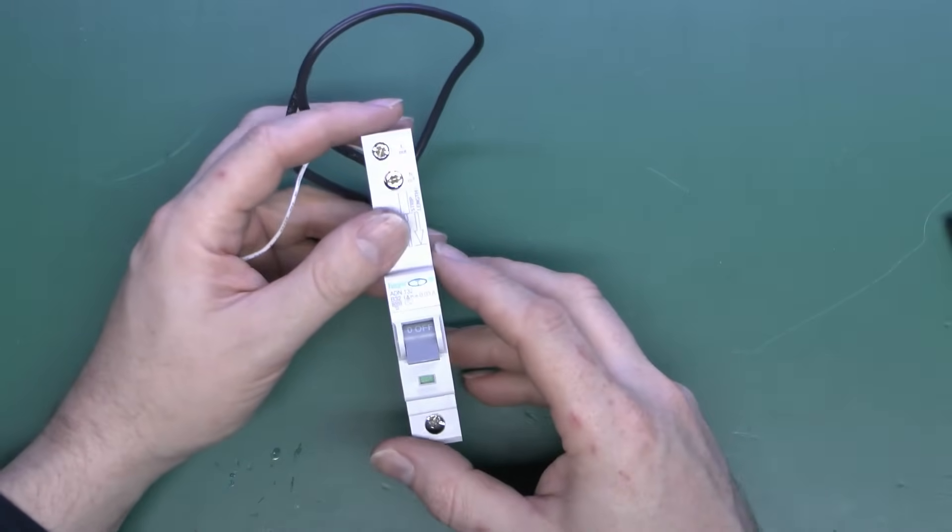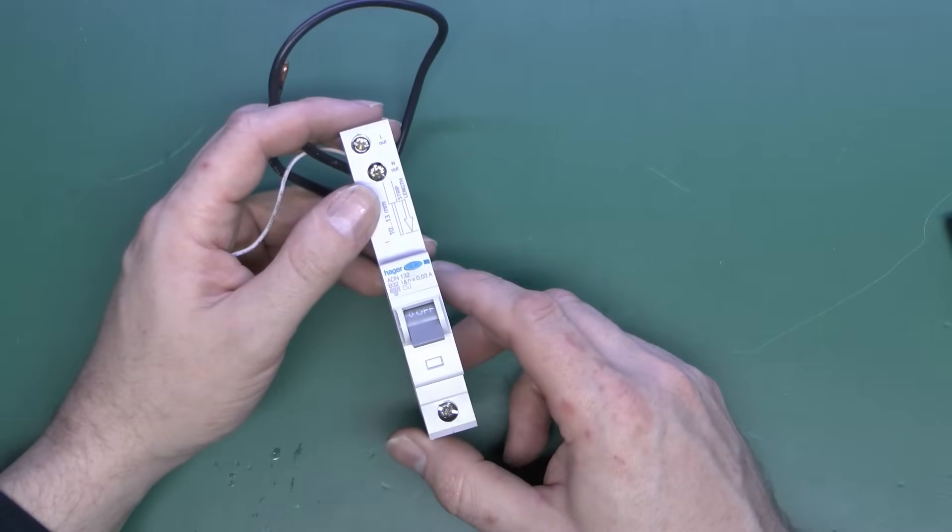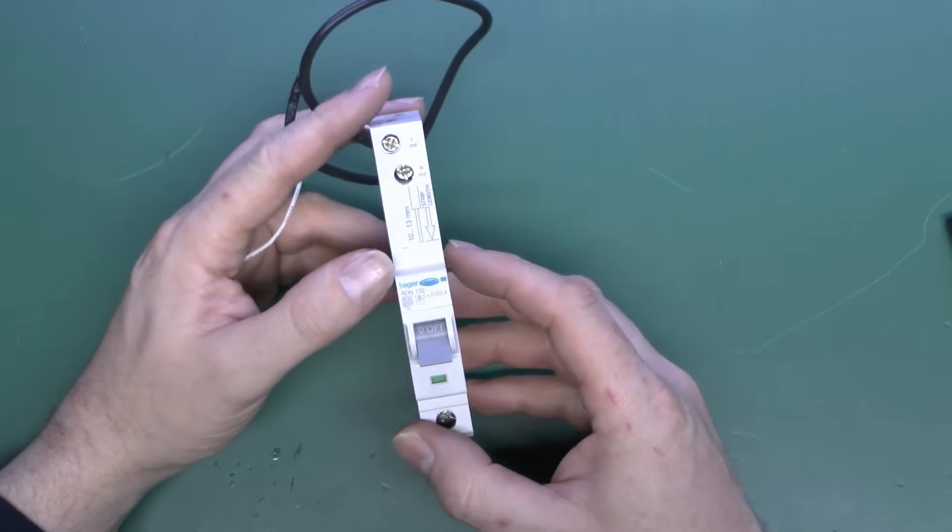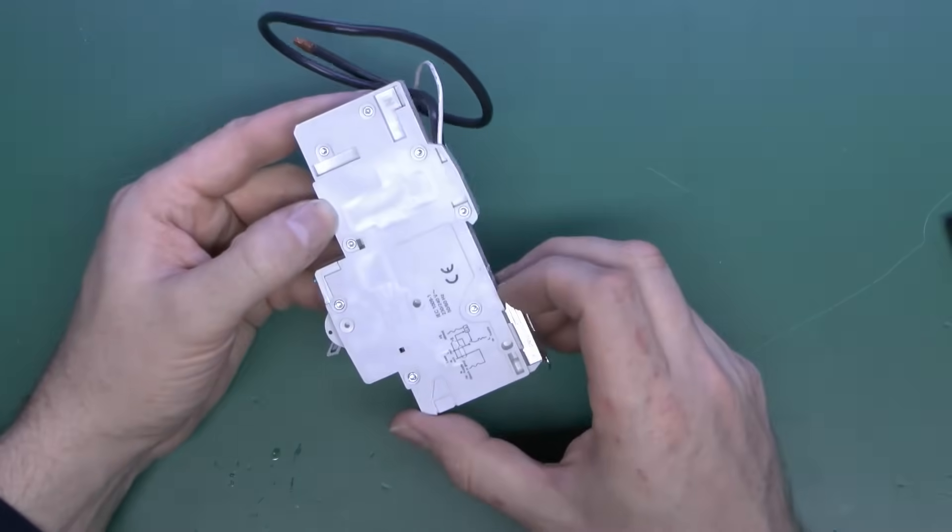So here is the sample device, and this is a Hager one as shown in that previous consumer unit. This one has actually been used and taken out of an installation, but nevertheless it's still perfectly fine.